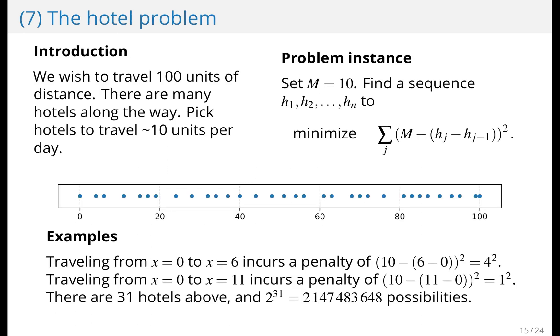The hotel problem. We'd like to travel a distance of 100 units, and we'd like to take a break and stay in a hotel at approximately every 10 units of distance. So we need to choose a subset of hotels to stay in to minimize some penalty. And the penalty that we choose to minimize is (10 minus how long you traveled each day) squared. So for instance, if you travel from zero to six, then the penalty you incurred that day is four squared because you're four off from 10.